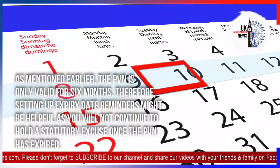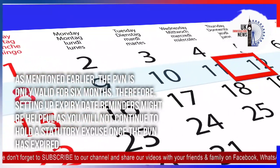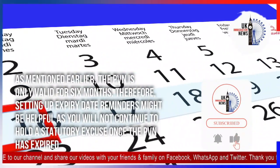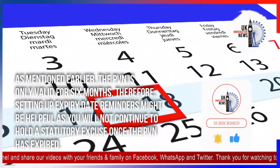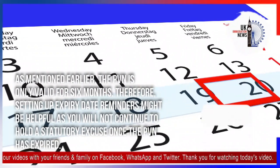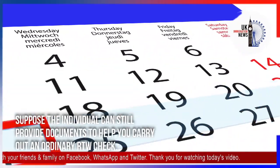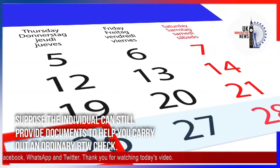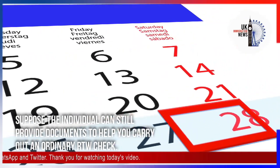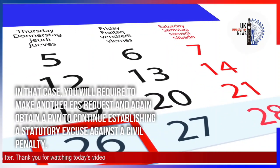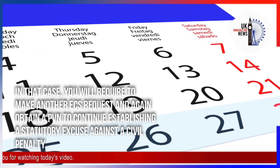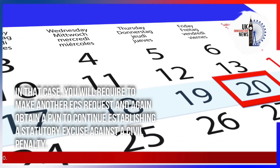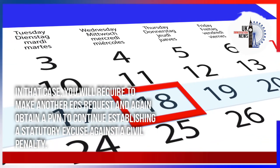Since the PVN is only valid for six months, setting up expiry date reminders may be helpful, as you will not continue to hold a statutory excuse once the PVN has expired. If the individual can still provide documents to help you carry out an ordinary RTW check, you will need to make another ECS request and again obtain a PVN to continue establishing a statutory excuse against a civil penalty.